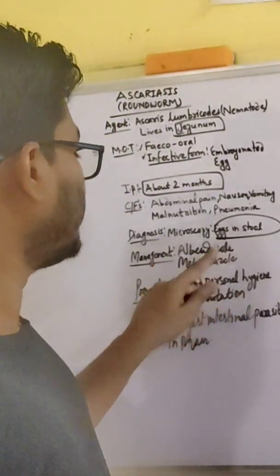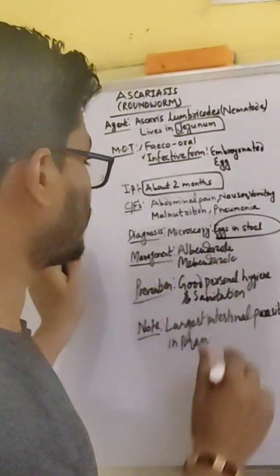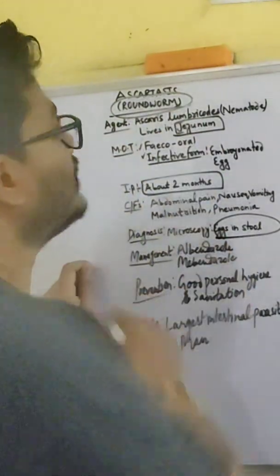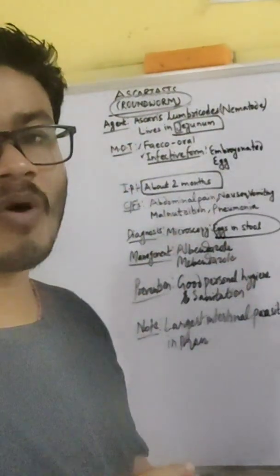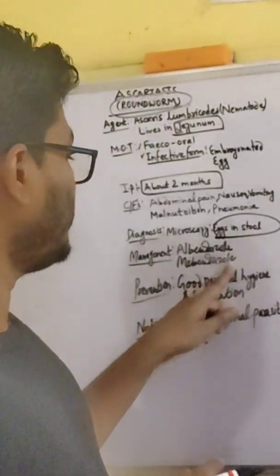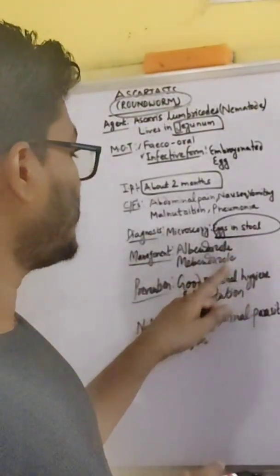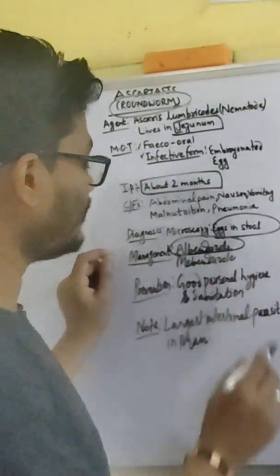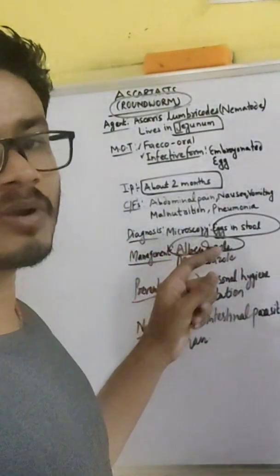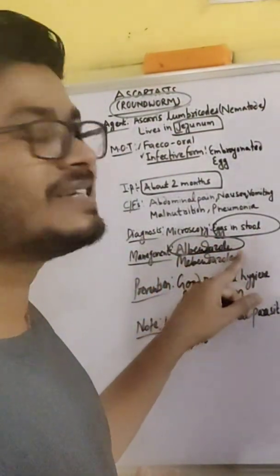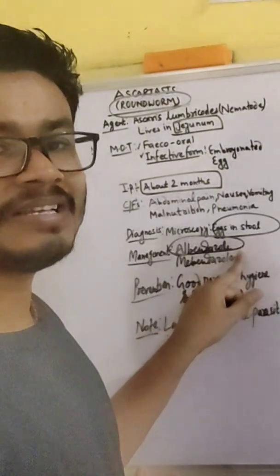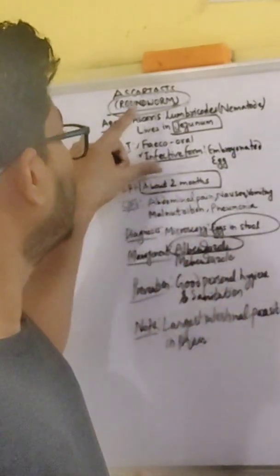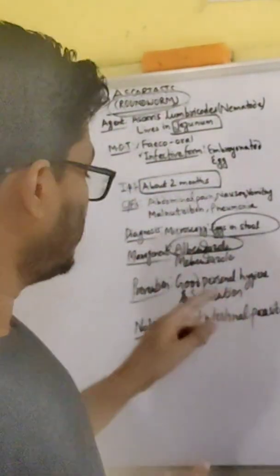Management includes albendazole and mebendazole, because it is a worm infection. Under different government programs, albendazole is given since childhood to prevent roundworm infection.